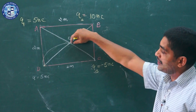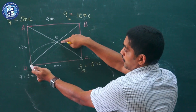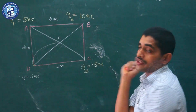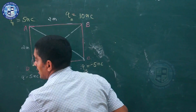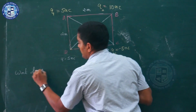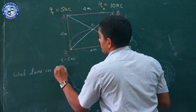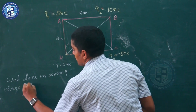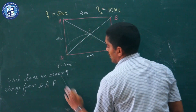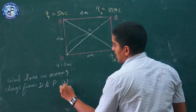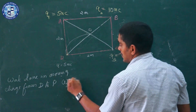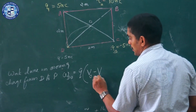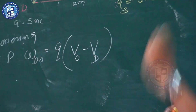To find out the work done, we need to find the potential difference between the two points. Once we get the potential difference, multiplying by the magnitude of the charge gives us the work done. So the work done in moving the charge from D to O is equal to Q into (V_O minus V_D).